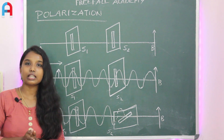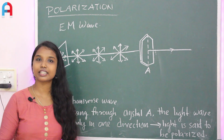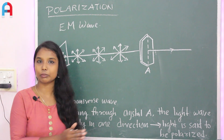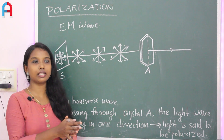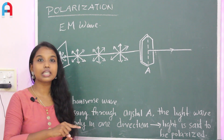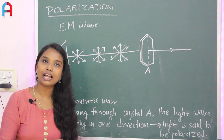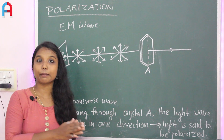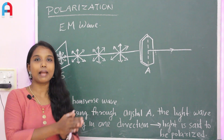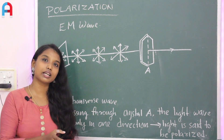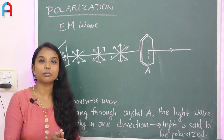This is what we have to do — set up a string in a transverse wave, and then set up a light wave. The electromagnetic wave is coupled with the electric field and the magnetic field. They are mutually perpendicular to each other, and both are perpendicular to the direction of propagation of the wave.